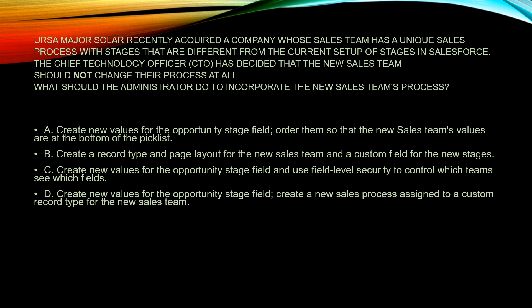What's important here is that they hired a new team with a different process and different stages. Option A — create new values for the opportunity stage field and order them so the new team's values are at the bottom — that's nonsense. Record types let you offer different business processes and pick list values, and that's what we're looking for.